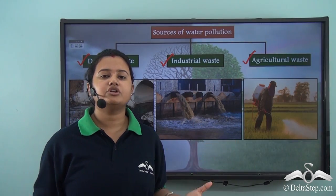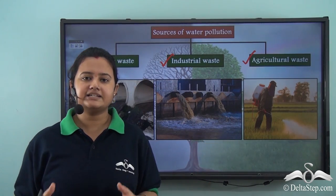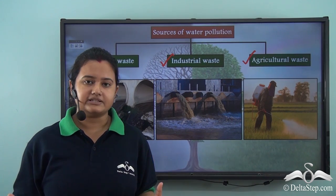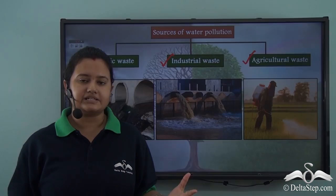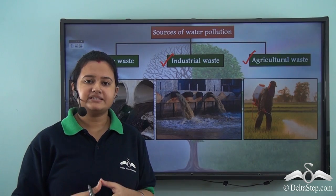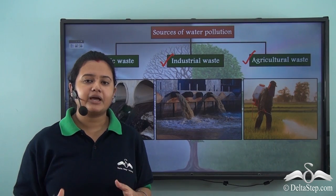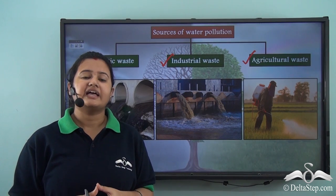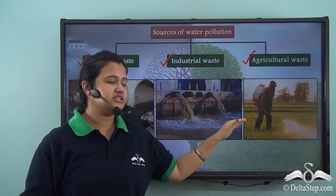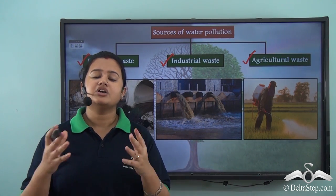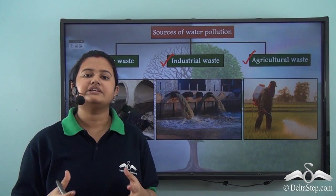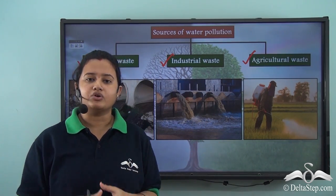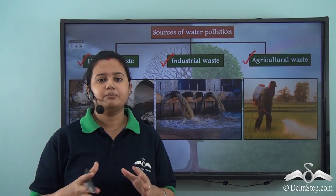According to modern agricultural techniques, insecticides and pesticides are used in fields to increase crop yield. These insecticides, pesticides, and chemical fertilizers contain toxic chemicals that are initially released into the soil, and during rainfall, these chemicals are washed away into water bodies, causing water pollution.